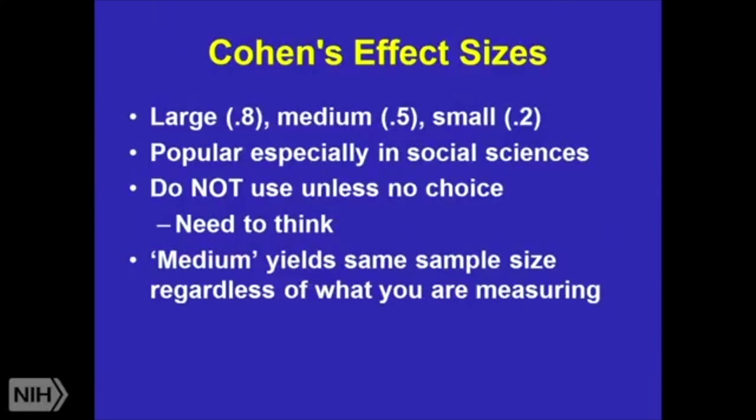I mentioned I don't like Cohen's effect sizes, but it is very popular to use them in sample size calculations when you don't have any other information. And Cohen himself, who has a very commonly used textbook in the psychological literature, says don't use them unless you don't have a choice. A large effect size is typically 0.8, medium is 0.5, small is 0.2. Medium, again, yields you the same sample size regardless of what you're measuring. That's the reason Cohen says please don't do this.